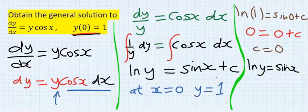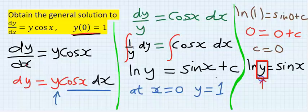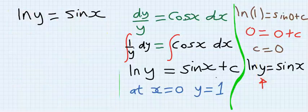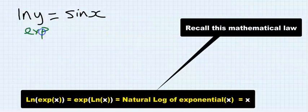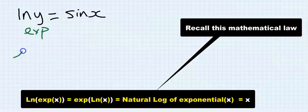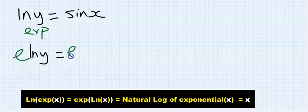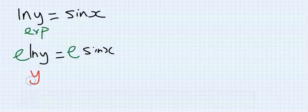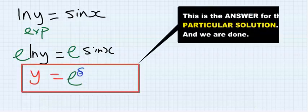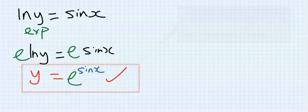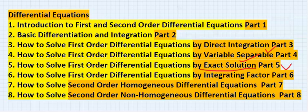My answer is ln y is sin x, no c. Next, make y the subject. To make y the subject, I will take exponential of both sides. Hence I will have exponential ln y is equal to exponential sin x, and I'm going to have y is equal to exponential sin x. This is the solution. I will see you in the next video.